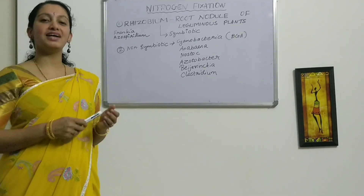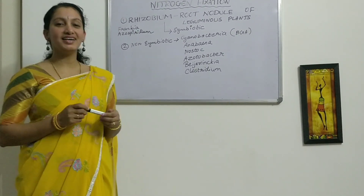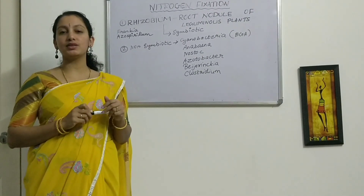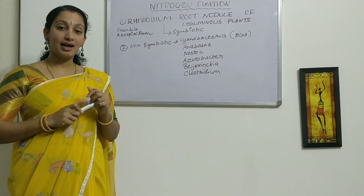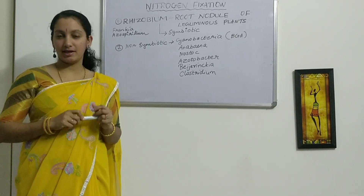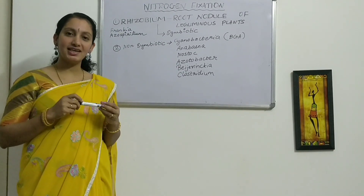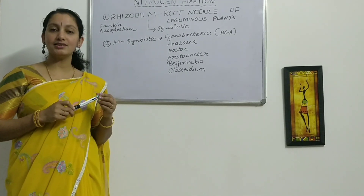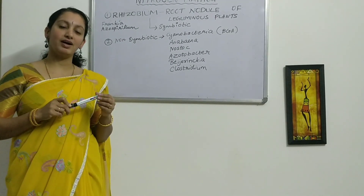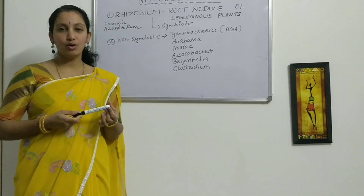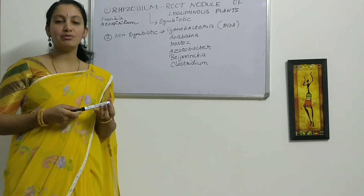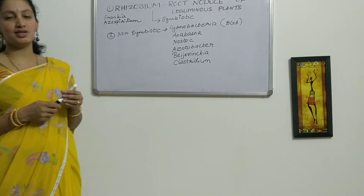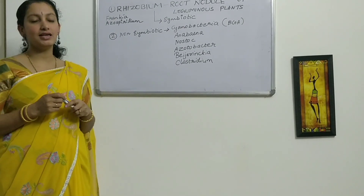Hello students, welcome to my new video. In this I am going to introduce you a type of organism which can fix atmospheric nitrogen and provide it to the plant. So hope you know the name of the organism — it's Rhizobium, right?